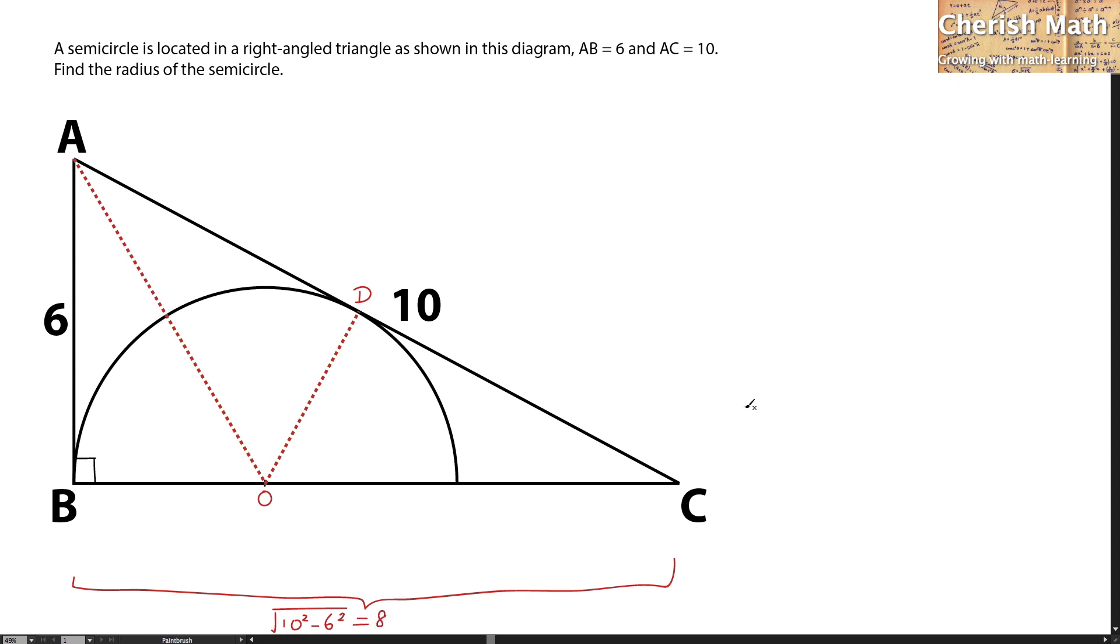Now I'm going to determine the length of each part. Since AB is tangent to the circle at point B measuring 6 units, AD would be the same as AB because AD is also a line of tangent to the circle.